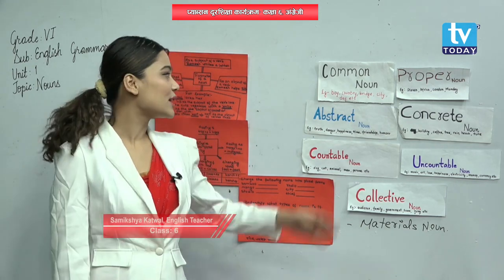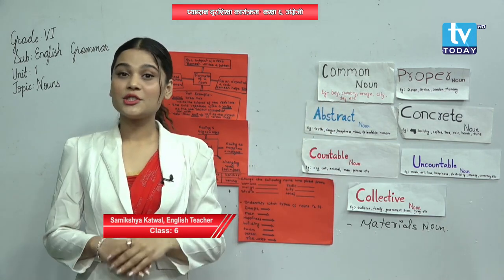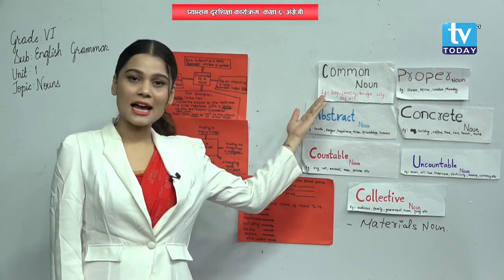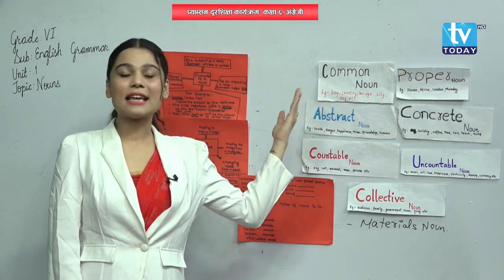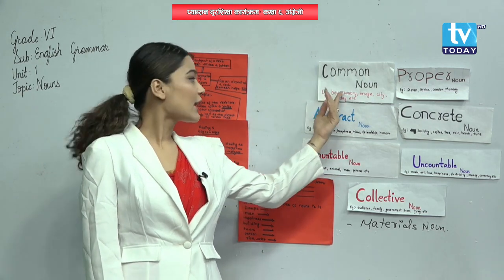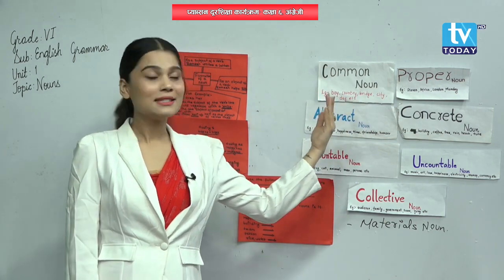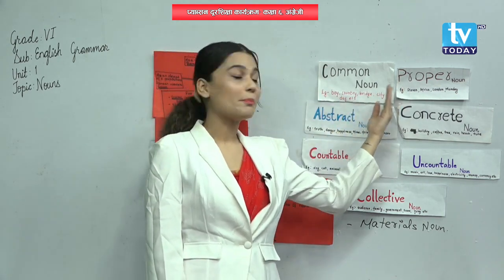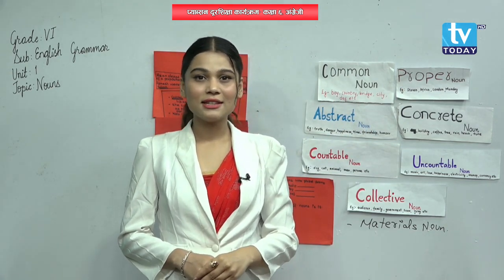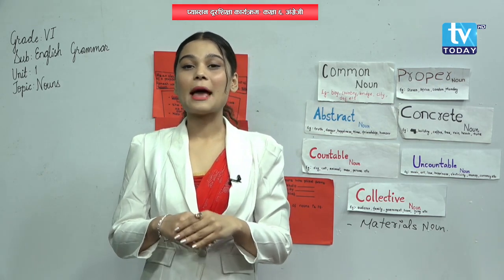Let's discuss the differences between common noun and proper noun. Common noun refers to general things, places, and people, and it can start with a small letter also and capital letter also — examples are boy, country, breeze, city, day, etc. Whereas proper noun refers to a particular person, people, things, etc., and it can only start with a capital letter.